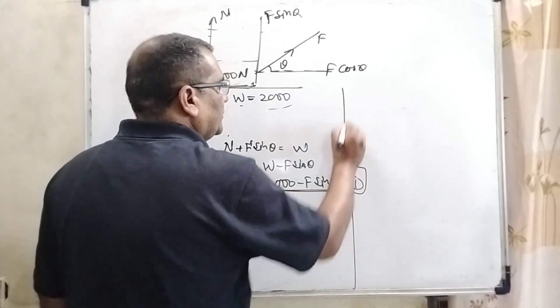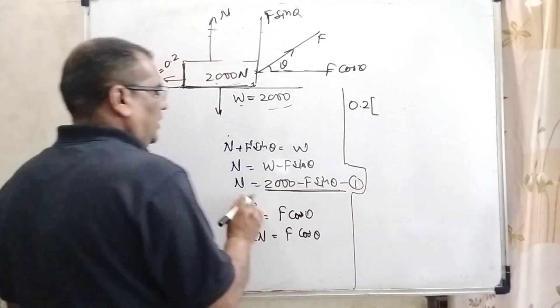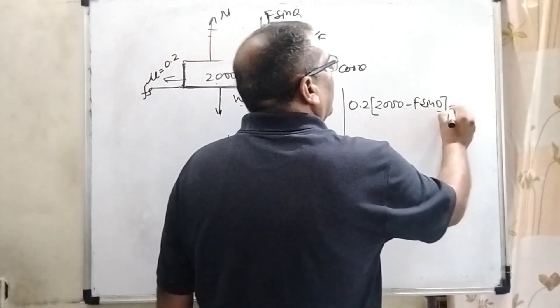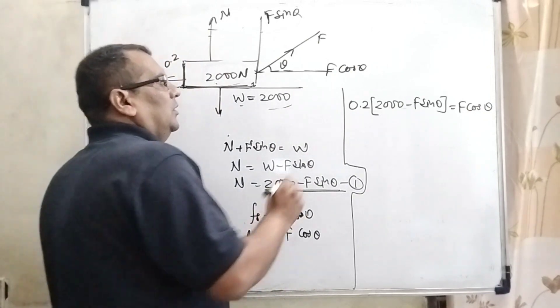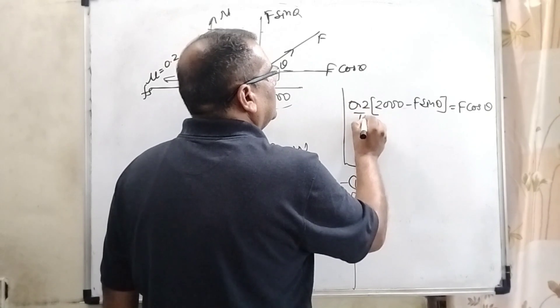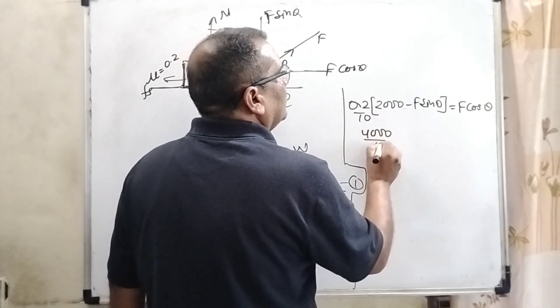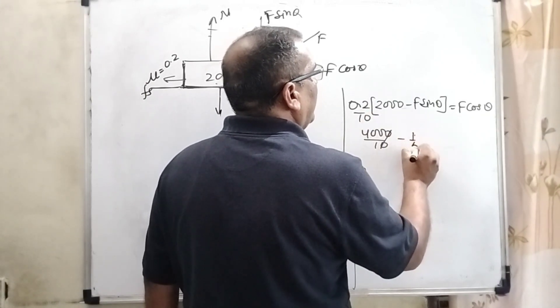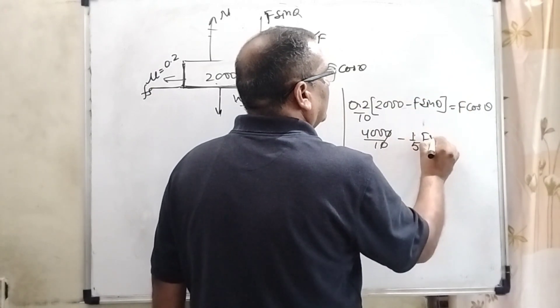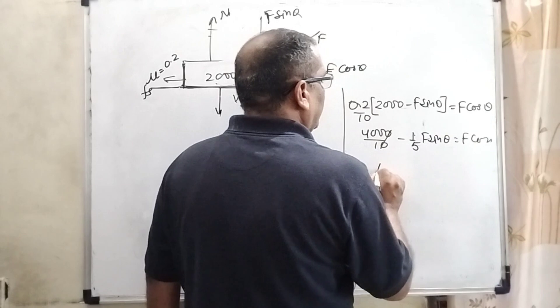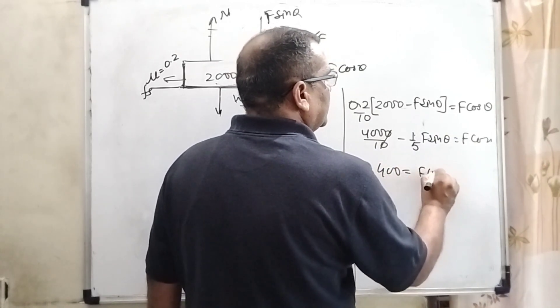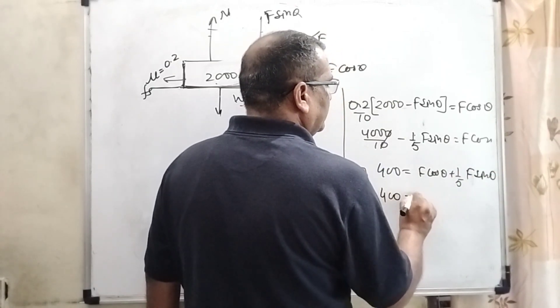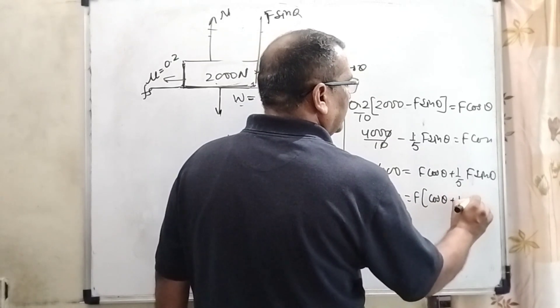So now substitute the value of N. Mu N is given 0.2, and N is 2000 minus F sin theta equal to F cos theta. Here multiply to get 400 minus one-fifth F sin theta equal to F cos theta.